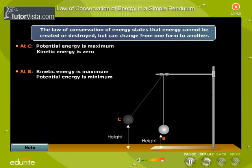At position B, it has maximum kinetic energy and minimum potential energy as it is at its lowest position.